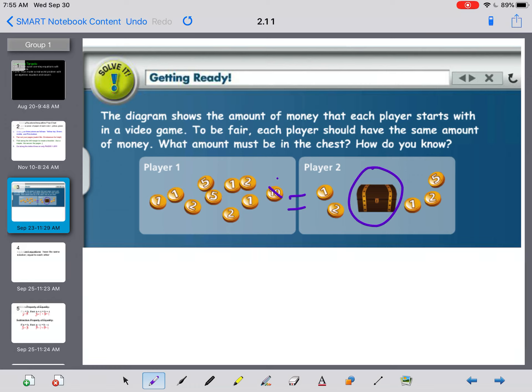What I would do is figure out first what player 1 has. If we add all these up, there's 10, 15, 20, 22, 24, 26, 27, 28, 29, 30. So player 1 has 30 coins, or 30 cents, we'll call it.